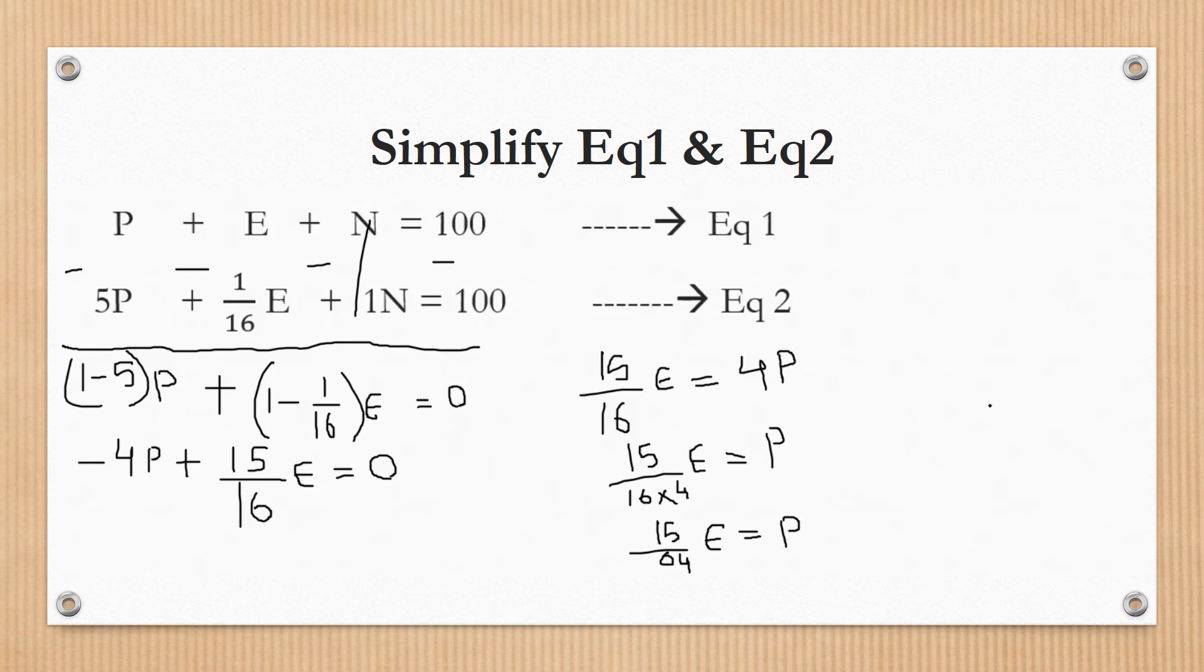Put E equals 64, the same number as divisor 64 or the multiple of 64. 15/64 times 64 equals 15. 64 and 64 get cancelled, so P is 15. When the eraser is 64, the pen is 15.